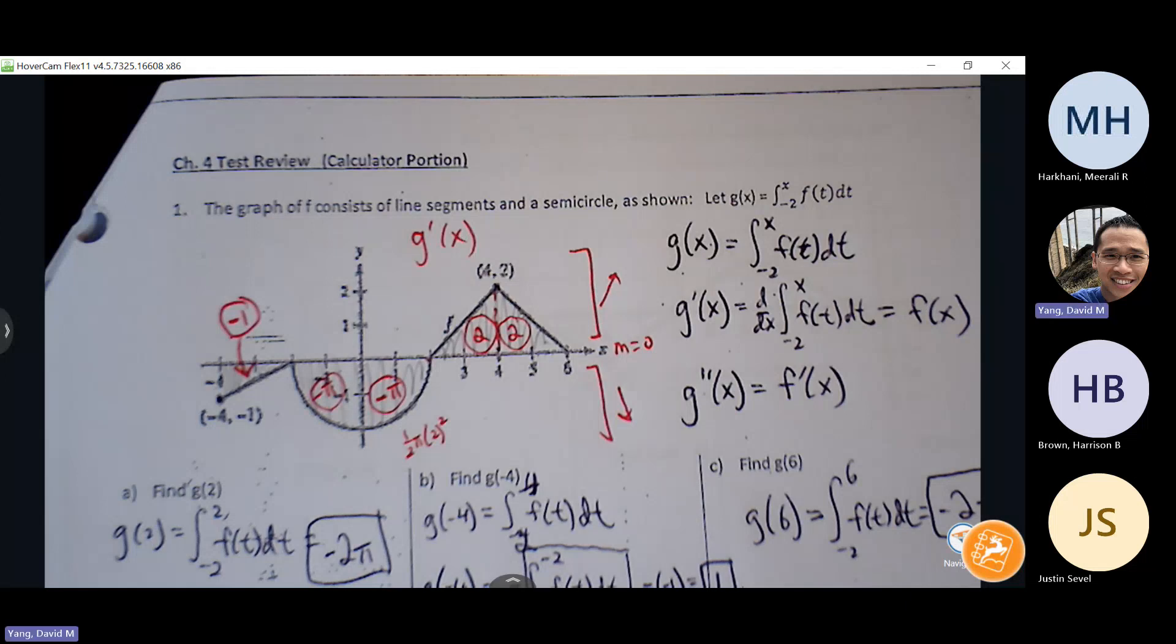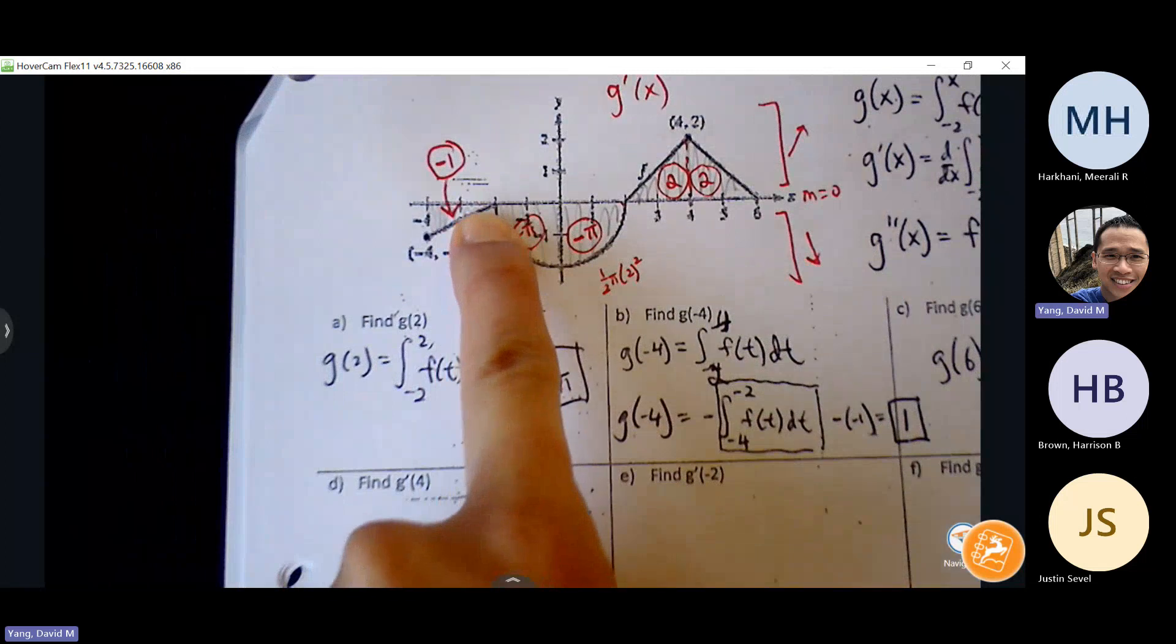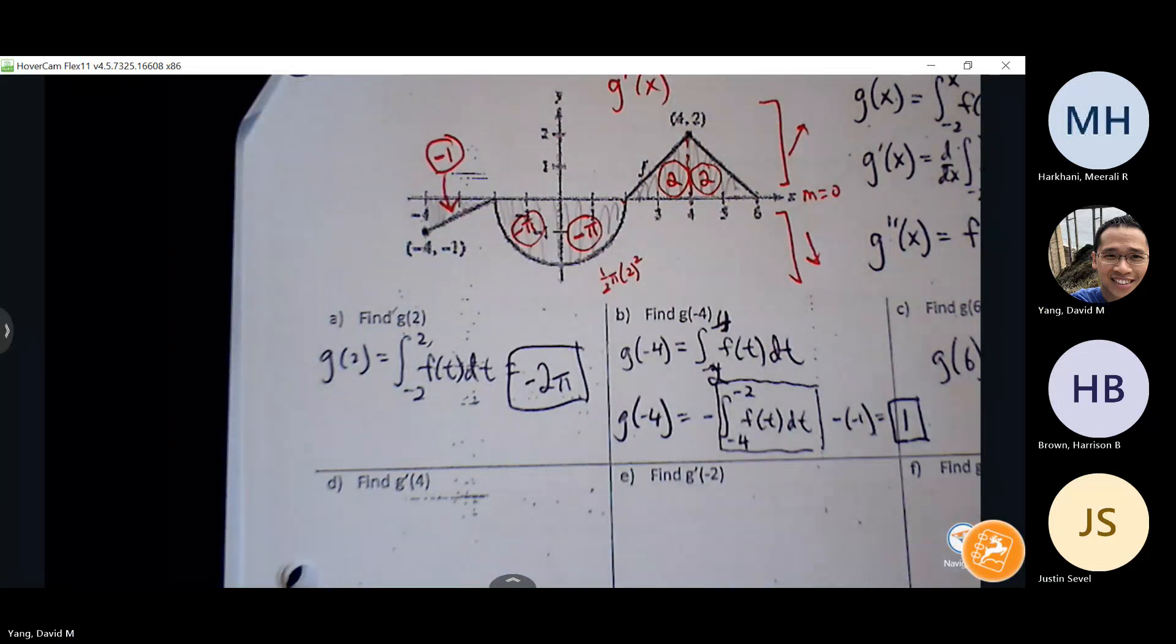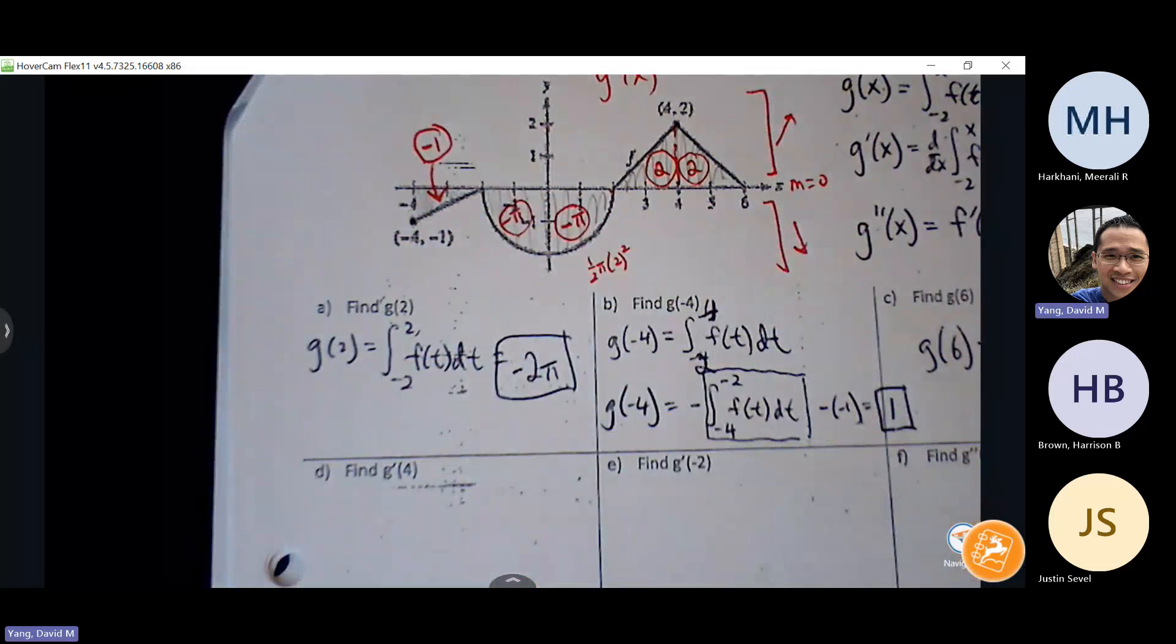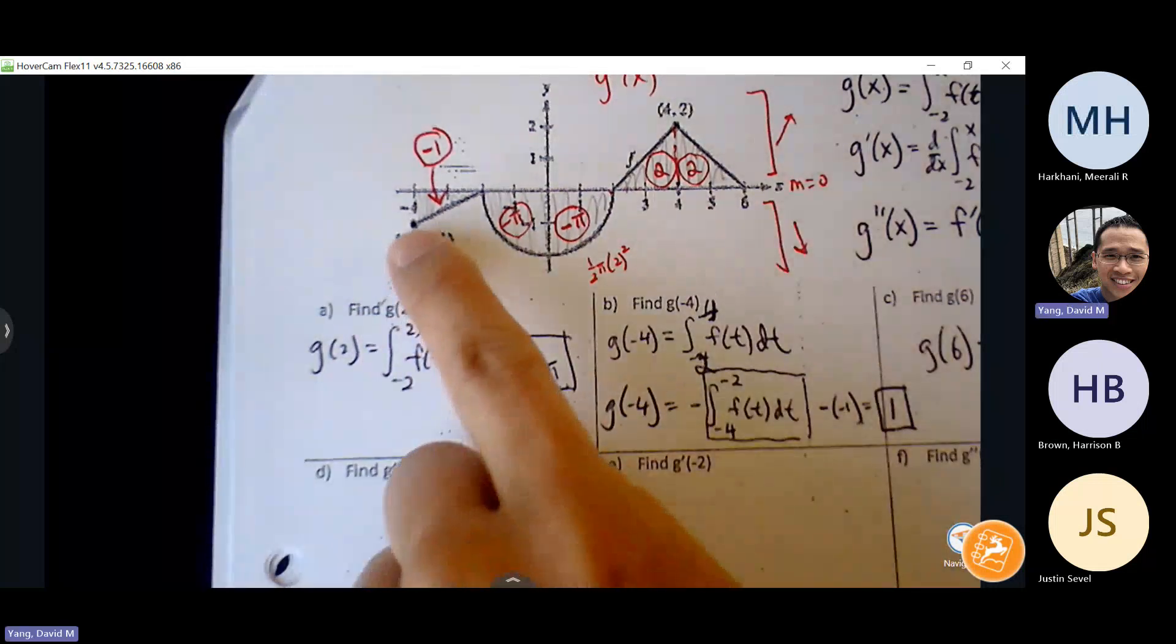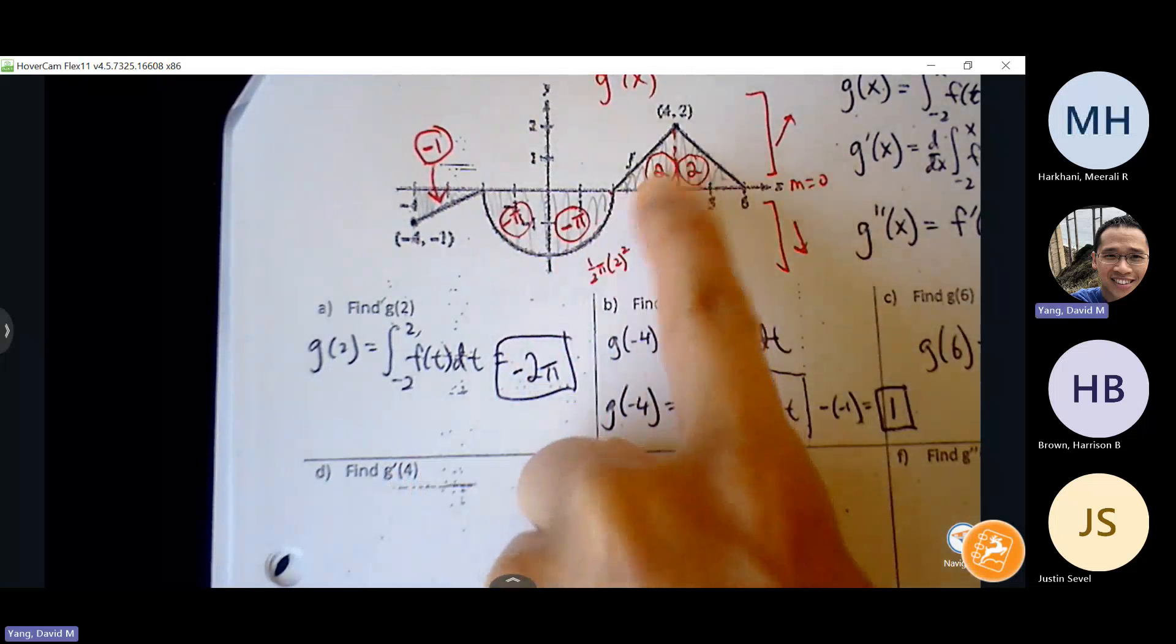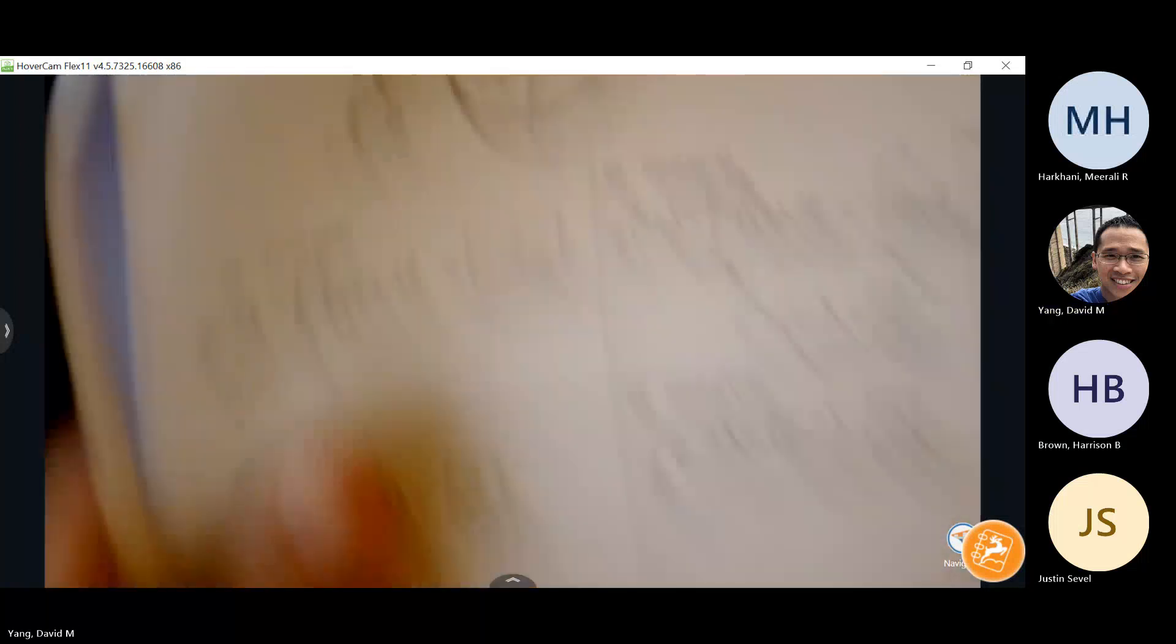Actually, there's a duplicate here. It looks like negative two is both an x-intercept and a relative max. So we're going to include that as well. And then once you create your sign line with your three critical points, then look at the slope, right? The slope of the derivative graph will tell you concavity. So this is concave up. Negative slope is concave down. Positive slope is concave up. Negative slope is concave down.